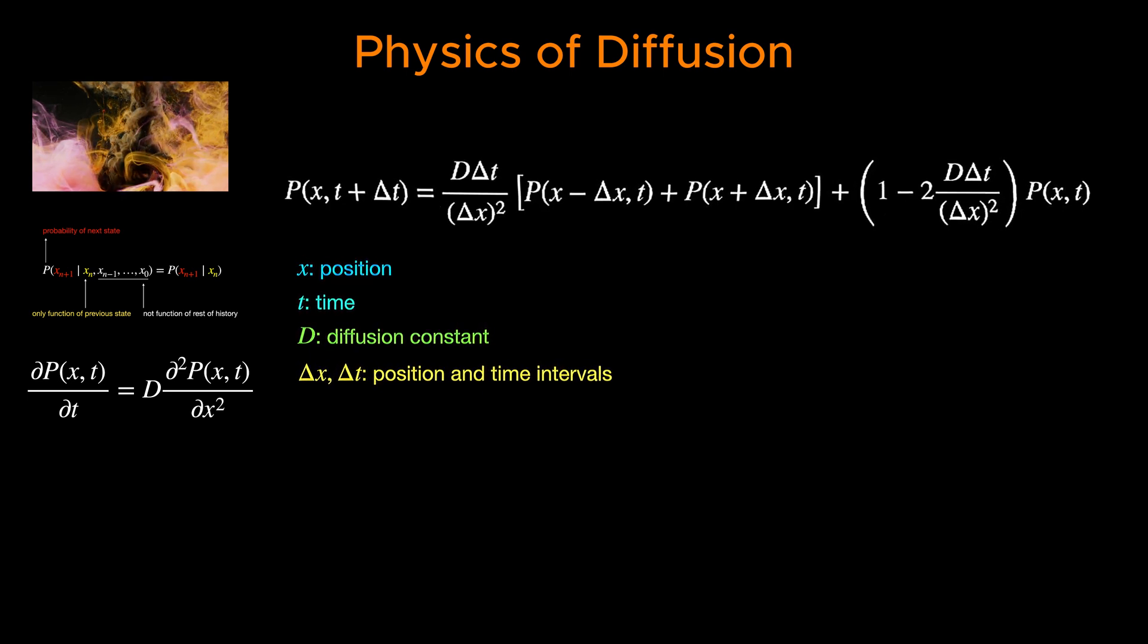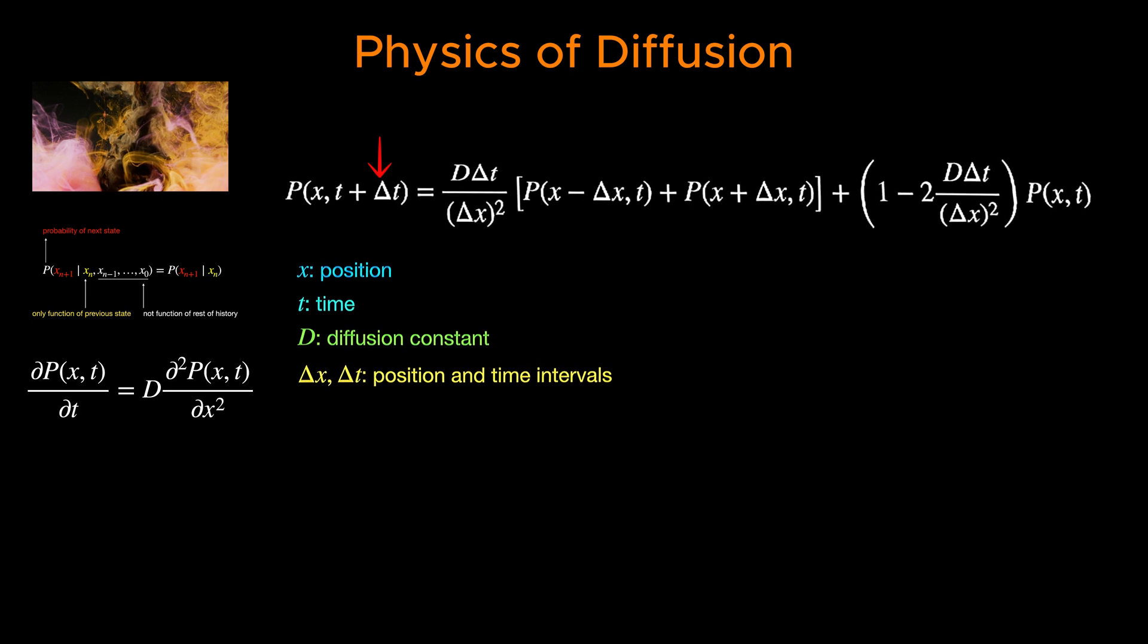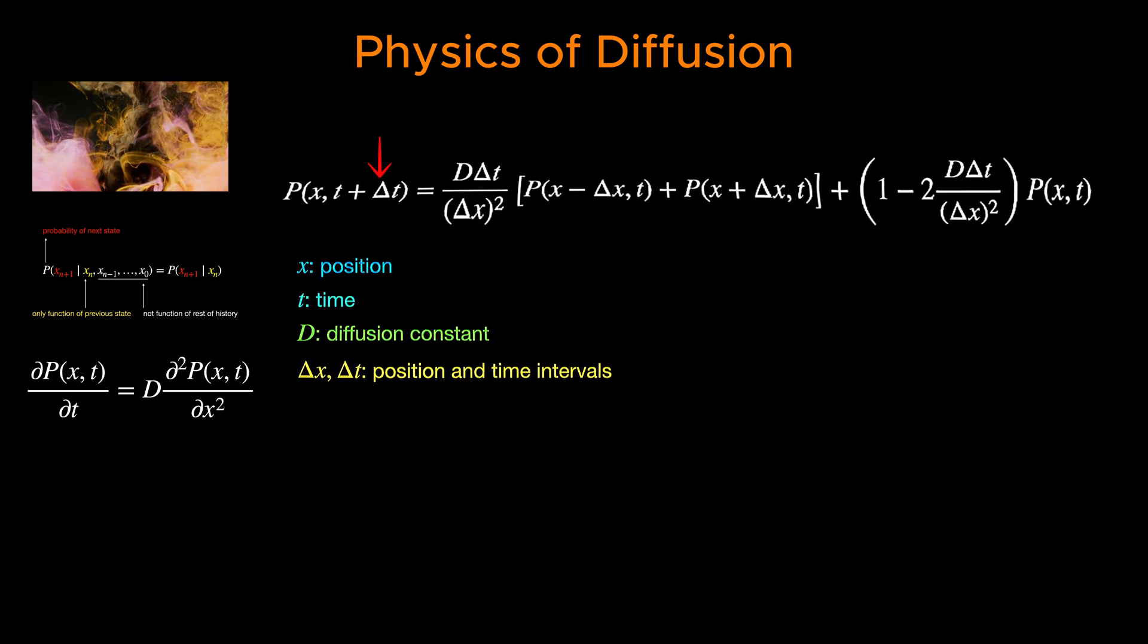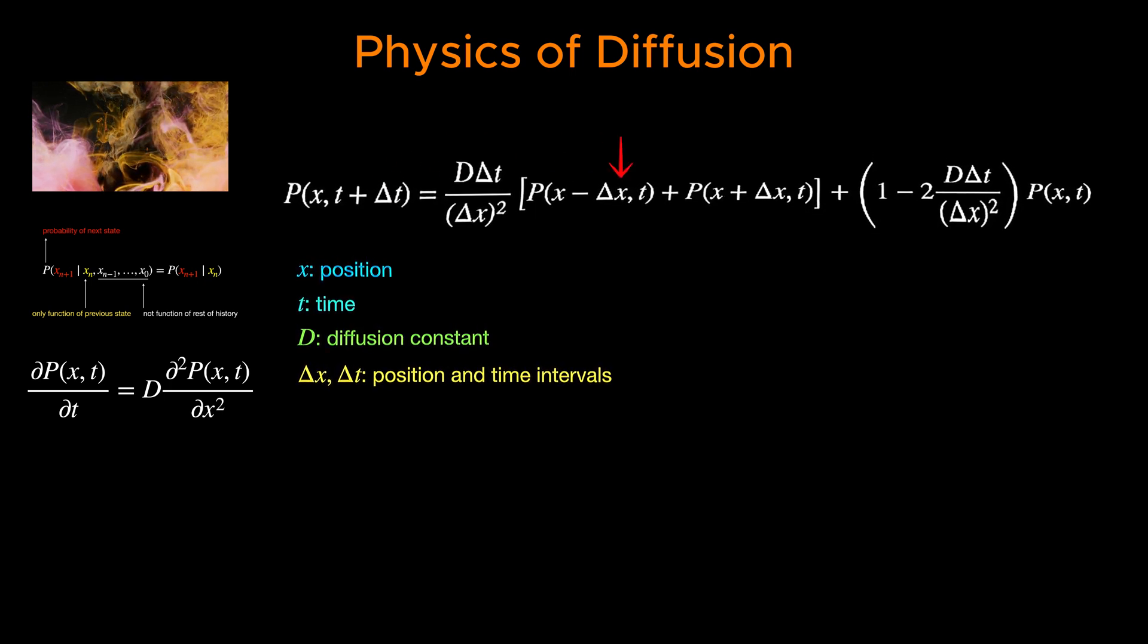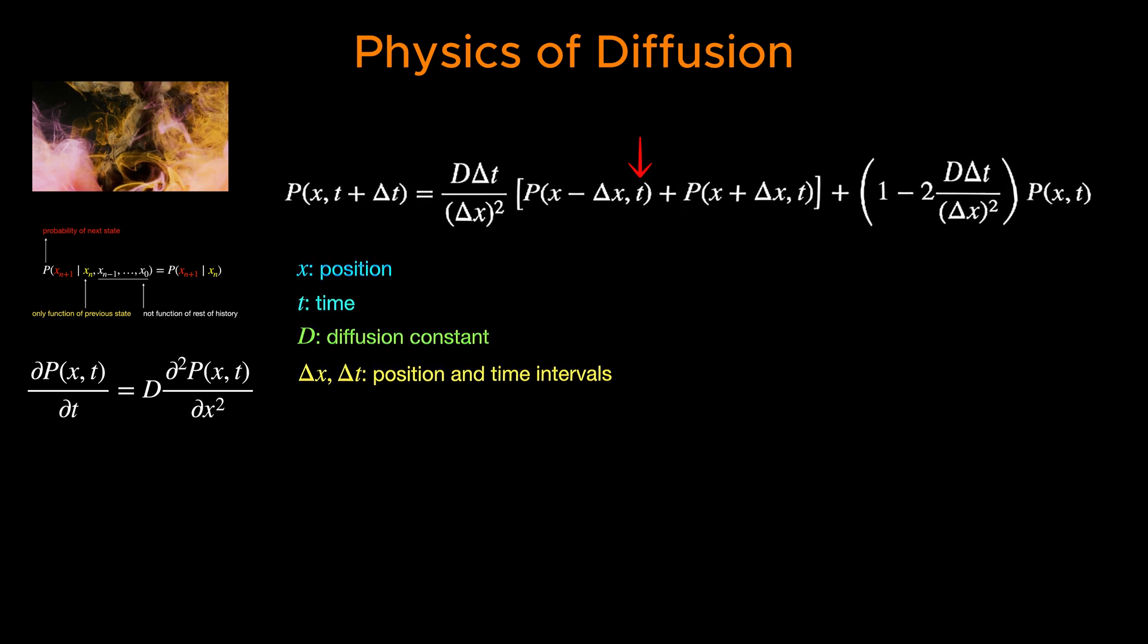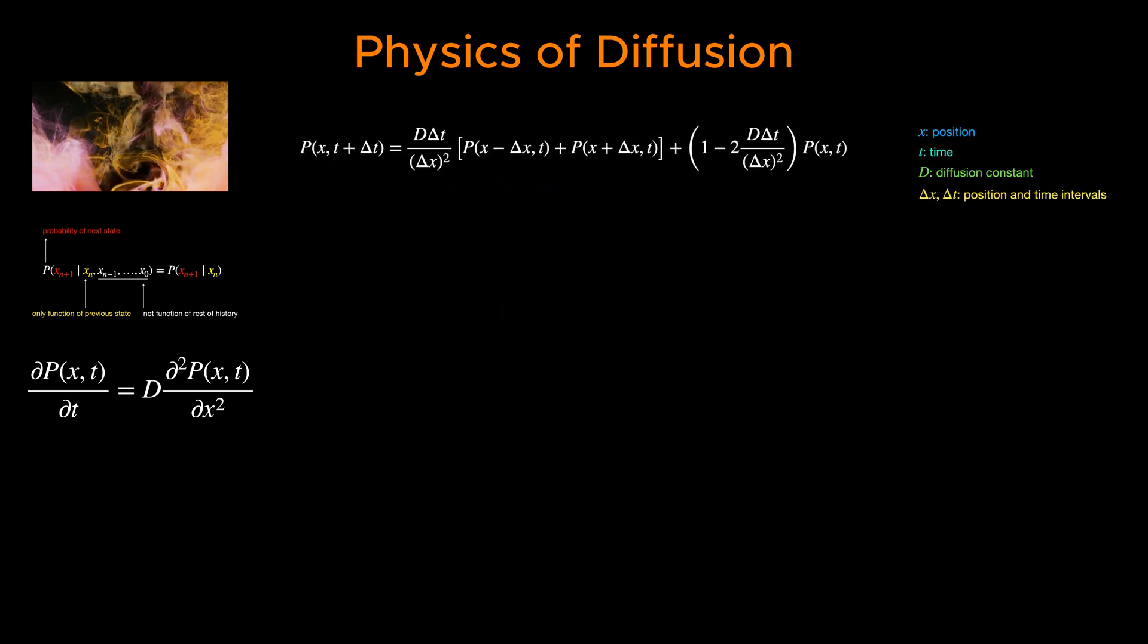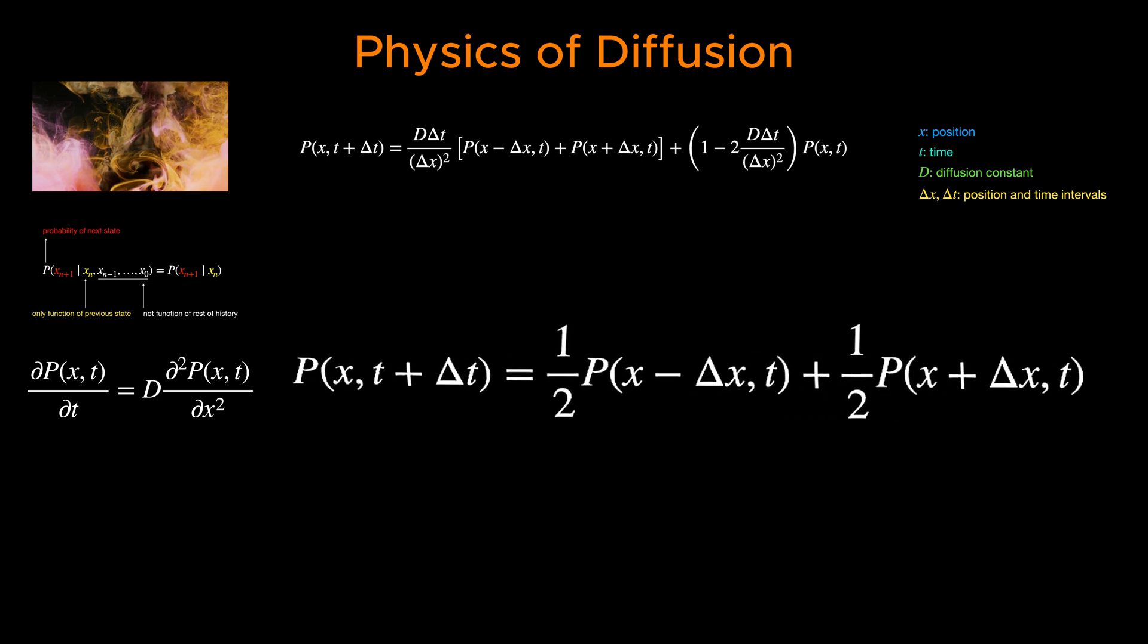A Markov chain provides a discrete, stepwise framework for modeling the movement of particles, where each step depends only on the current position, and not on the history of the particle's trajectory. This is analogous to the random walk model, a fundamental concept in diffusion theory.